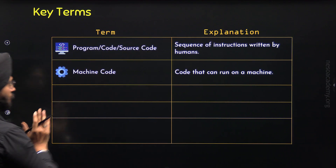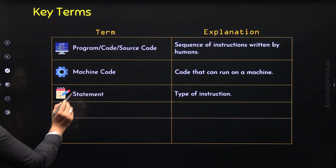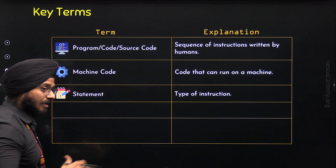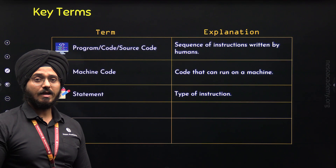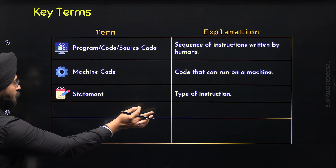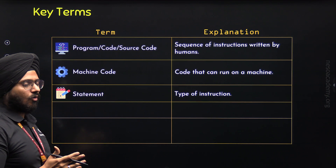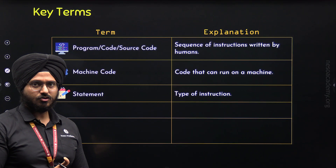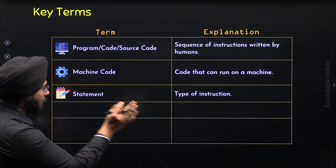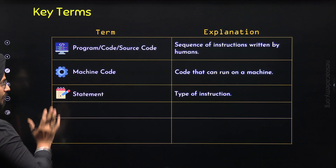Now here comes the third term: Statement. Statement refers to a type of instruction. There are many different types of instructions in C++ programming language. We call an instruction a statement. As we proceed further in this course, we will learn different types of instructions, but right now we just need to understand that an instruction in a programming language is called a statement.